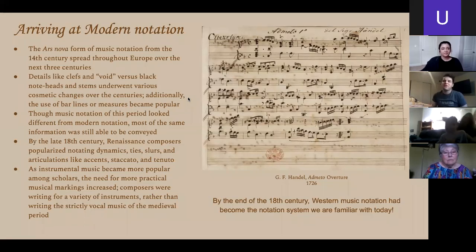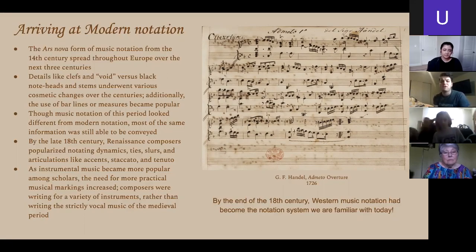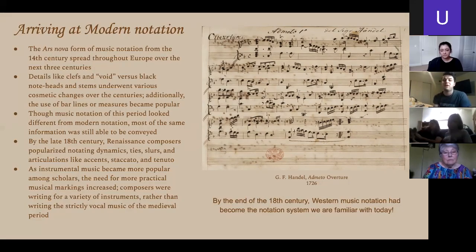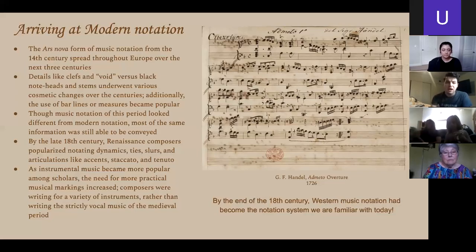And now we have arrived at modern notation. The Ars Nova form of notation from the 14th century spread throughout Europe over the next three centuries. Details like clefs and void versus black note heads and stems underwent various cosmetic changes over the centuries. Additionally, the use of bar lines and measures became popular — so you start to see time signatures like six-eight, three-four, or two-four at the beginning of the bar. By the late 18th century, Renaissance composers popularized notating dynamics, ties, slurs, and articulations like accents, staccato, and tenuto. As instrumental music became more popular among scholars, the need for more practical music markings increased.